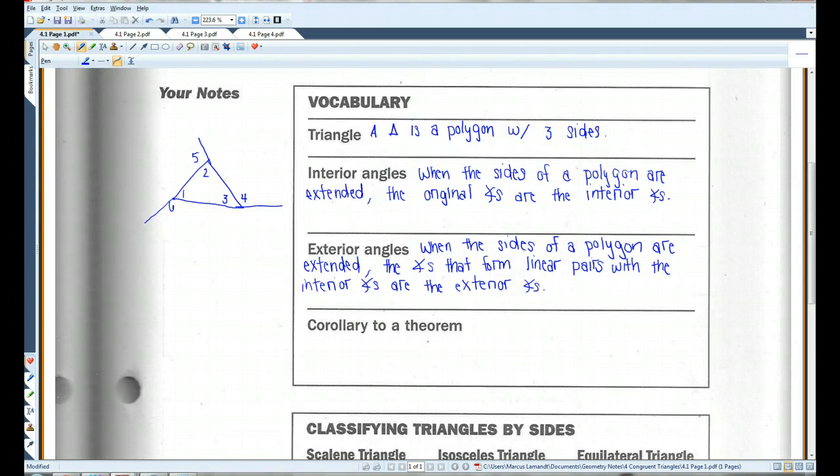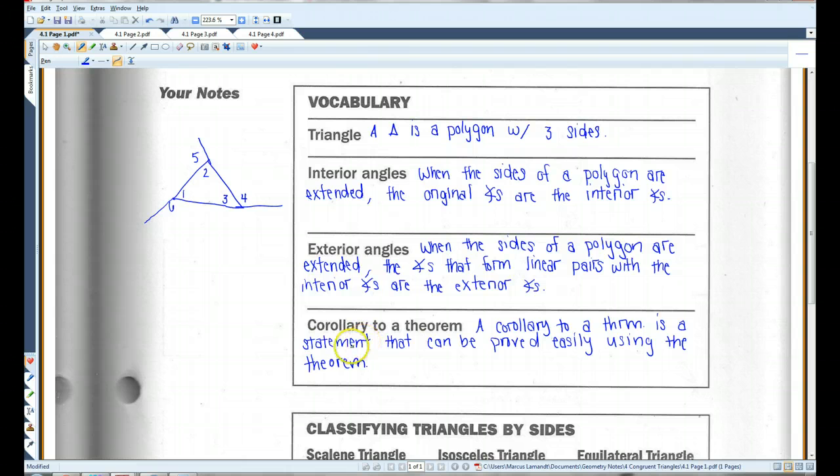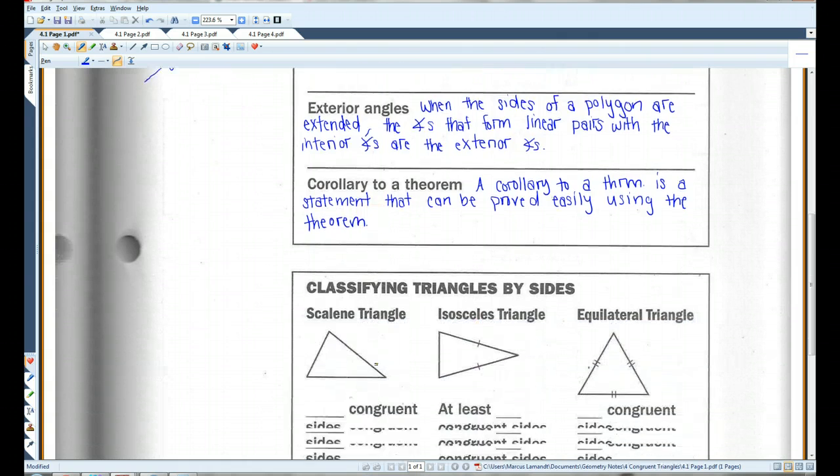A corollary. A corollary to a theorem is a statement that can be proved easily using the theorem. Generally, a corollary is an extension of a particular theorem or a special case of a certain theorem.